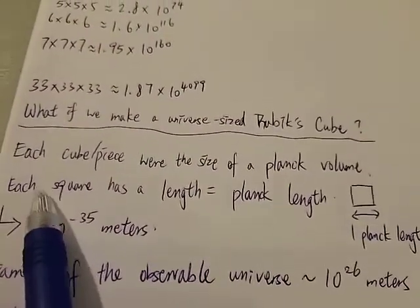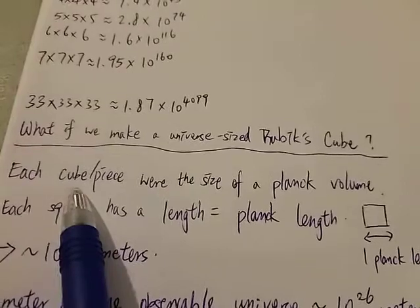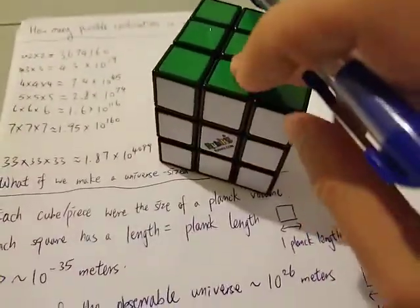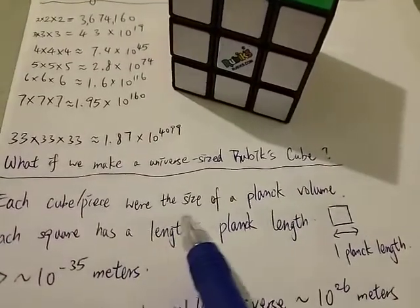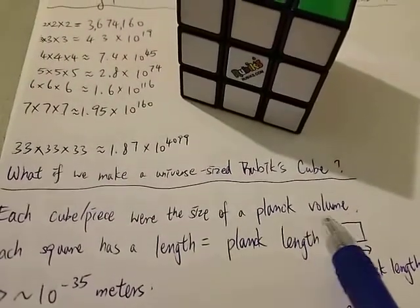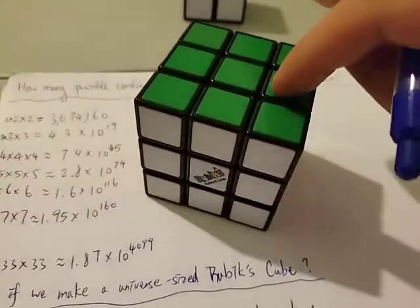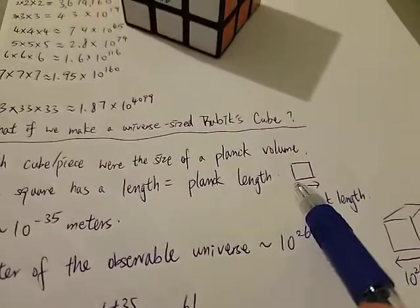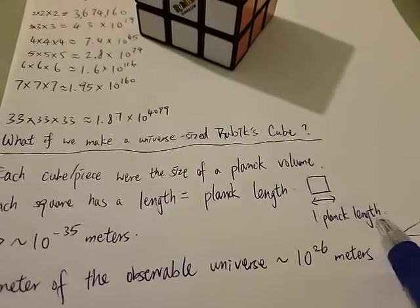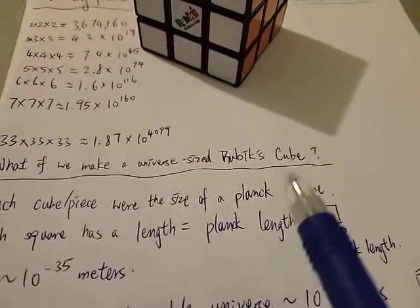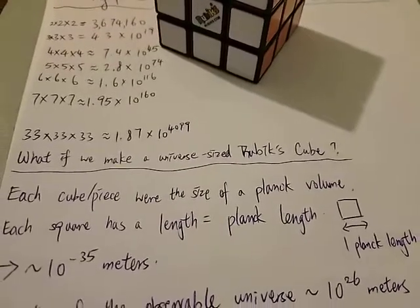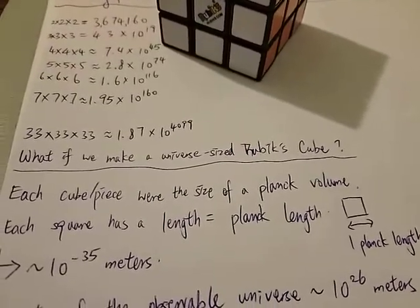Each cube, in this case, each piece here, will have the size of a Planck volume. That means each side here has a length of a Planck length. A Planck length is the smallest length scale ever defined in physics. You cannot go any smaller than that.